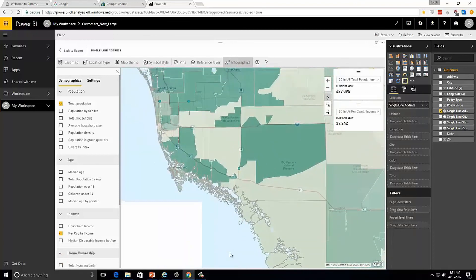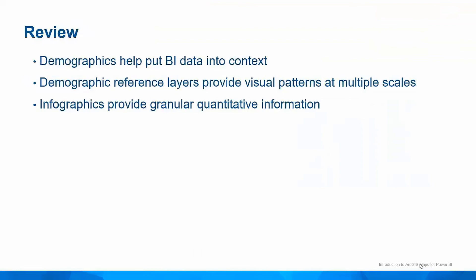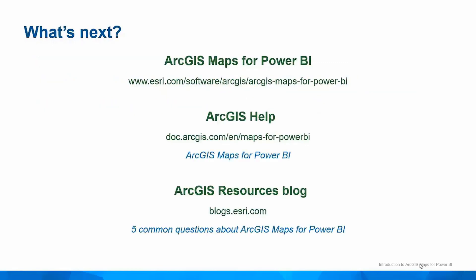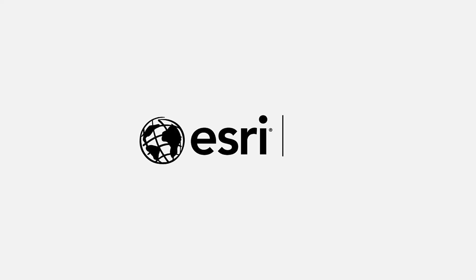So that gives you a quick look at what can be done with demographics inside the ArcGIS map visual. In that demo, we learned that demographics can help put BI data into context, that demographic reference layers can provide visual patterns at multiple scales, and that infographics can provide granular, quantitative information about the people that live in a place. To learn more, check out the product page and the documentation site to get the very latest information about ArcGIS maps for Power BI. On behalf of everyone at Esri, thank you for watching.